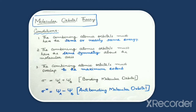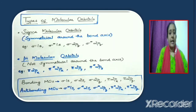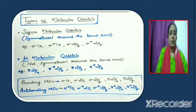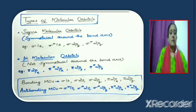A bonding molecular orbital is represented as sigma and the anti-bonding molecular orbital is represented as sigma star. There are two types of molecular orbitals based on whether the orbitals are symmetrical around the bond axis or not. Those orbitals which are symmetrical around the bond axis are called sigma molecular orbitals. The different sigma molecular orbitals are: sigma 1s, sigma star 1s, sigma 2pz, sigma star 2pz.